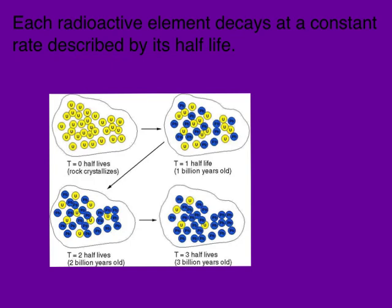Each radioactive element decays at a constant rate, and that rate is described by its half-life. Here we see a sample of a rock, and all of these yellow atoms are representing the uranium in that rock. After a certain time — one half-life — half of that uranium will have changed into lead. So here, half of these yellow atoms have changed into blue atoms. And then, after another half-life, half of those remaining yellow atoms will change into lead. And after another half-life, half of those yellow atoms will change into lead again.